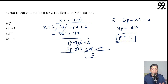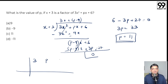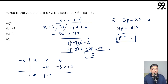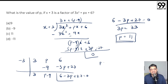Now using synthetic division for the same question: we write the coefficients — 3, p, and 6. Since x plus 3 is a factor, minus 3 is on the left. Write 3 as it is; minus 3 times 3 gives minus 9, so we get p minus 9. Minus 3 into p minus 9 gives minus 3p plus 27. Adding the last two terms gives 6 minus 3p plus 27 equals 0, again giving p equals 11. So the correct answer is option C, that is 11.